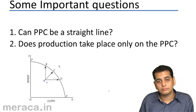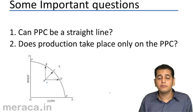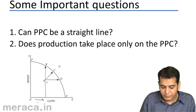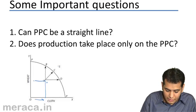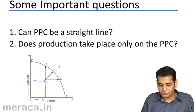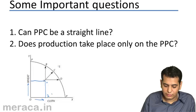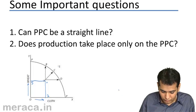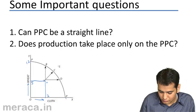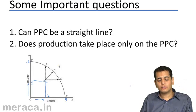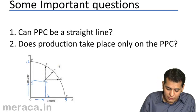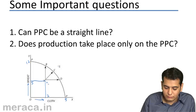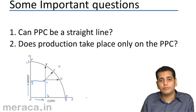Can we produce at point R? Yes, we can produce at point R. If we produce at point R, there are these many units of cloth and these many units of wheat that will be produced — let's say 2 units of cloth and 5 units of wheat are produced. Taking a close look at what is happening: at point R, my production is less — I am only producing 2 units of cloth and 5 units of wheat.